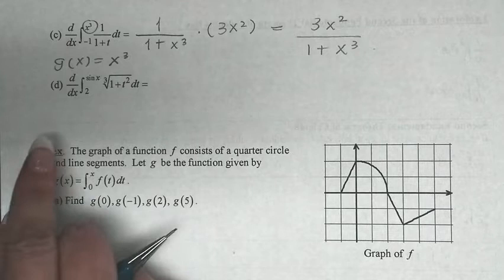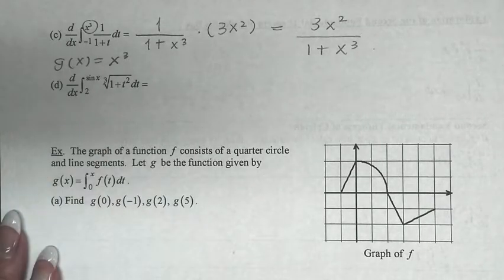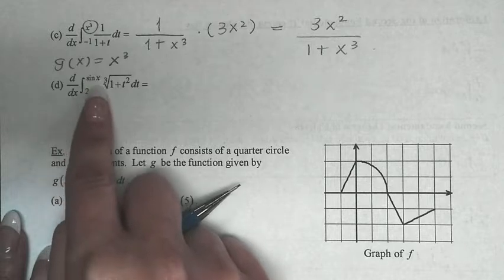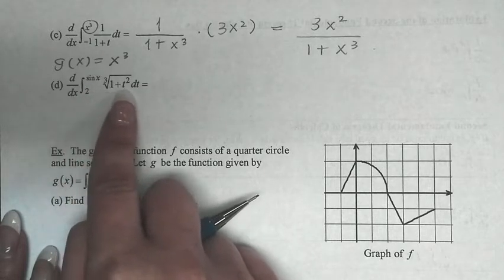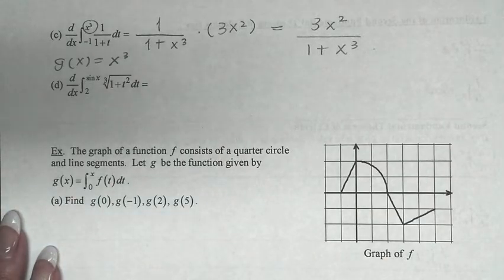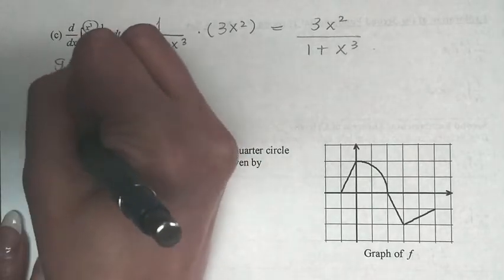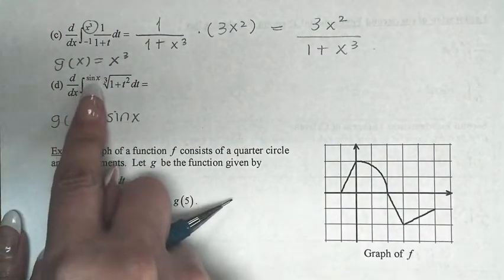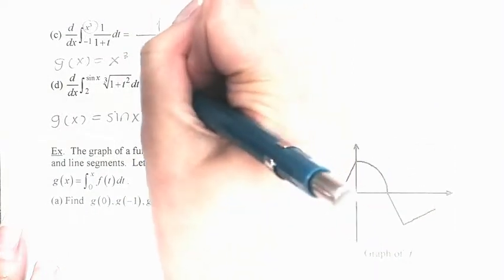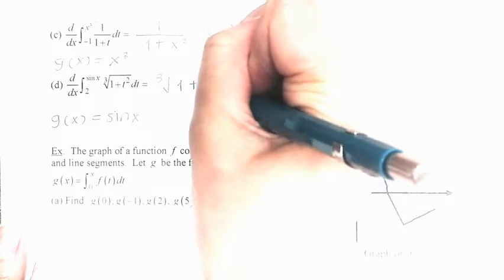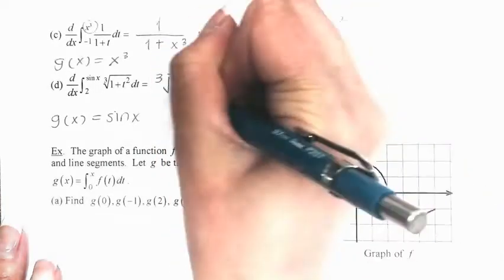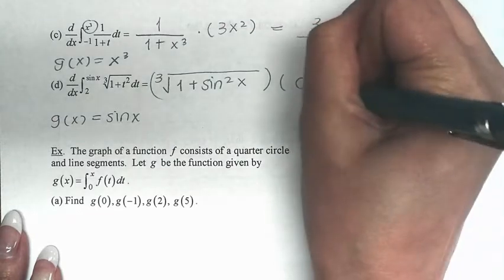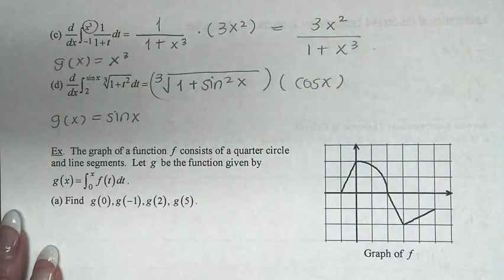The limit of integration can also be sine, tangent, cosine — any function. So we have d/dx of the integral from 2 to sin(x) of the cube root of (1 + t²) dt. We spot that this requires the chain rule version, with g(x) = sin(x). Once we recognize that, we plug it in: the result is the cube root of (1 + sin²(x)), times the derivative of sin(x), which is cos(x).